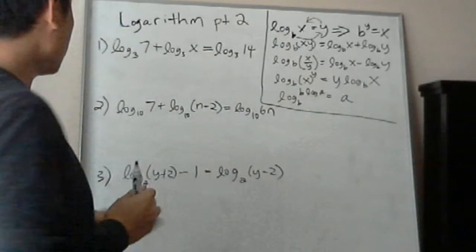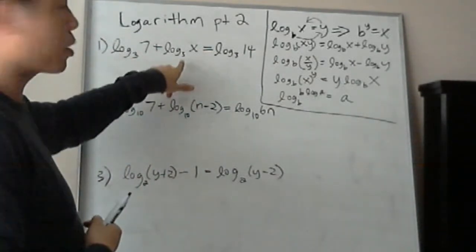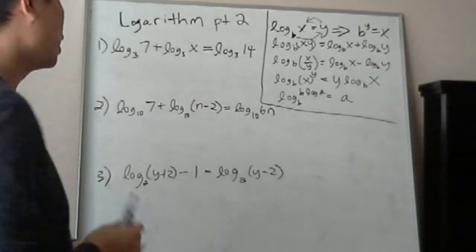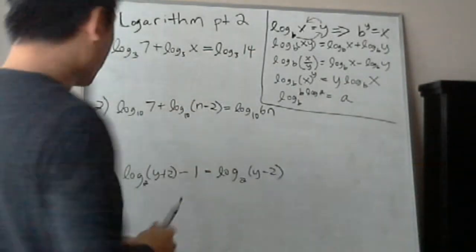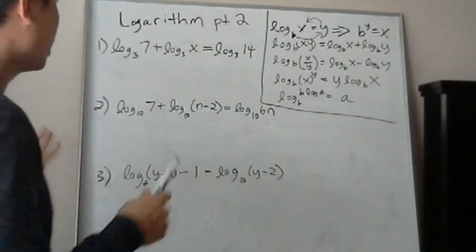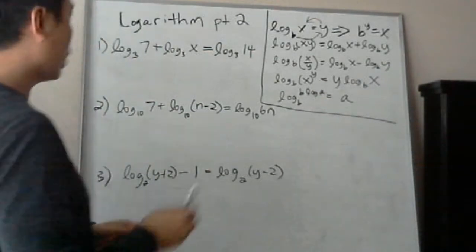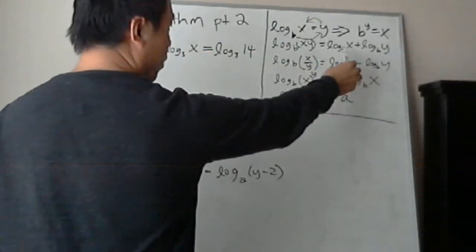So the first one is log base 3, 7, plus log base 3, x equals to log base 3, 14. We don't really have to worry about the bases here because all the bases are the same. So all we worry about is the 7x and the 14.